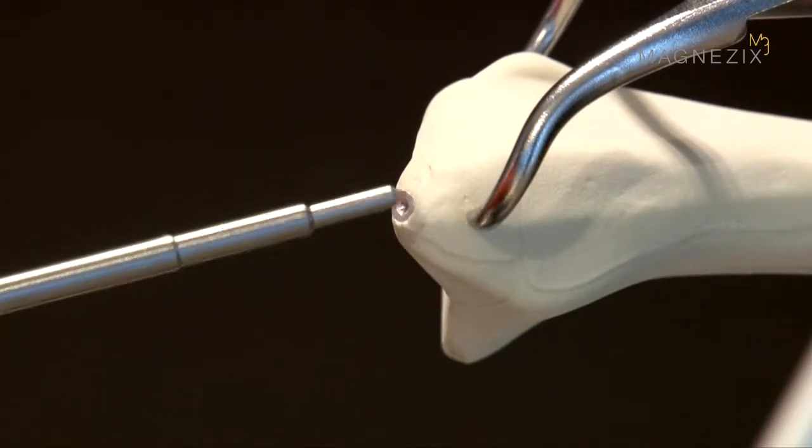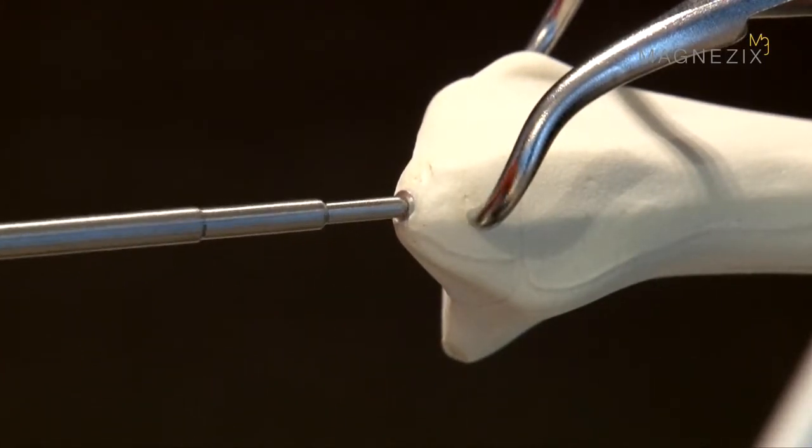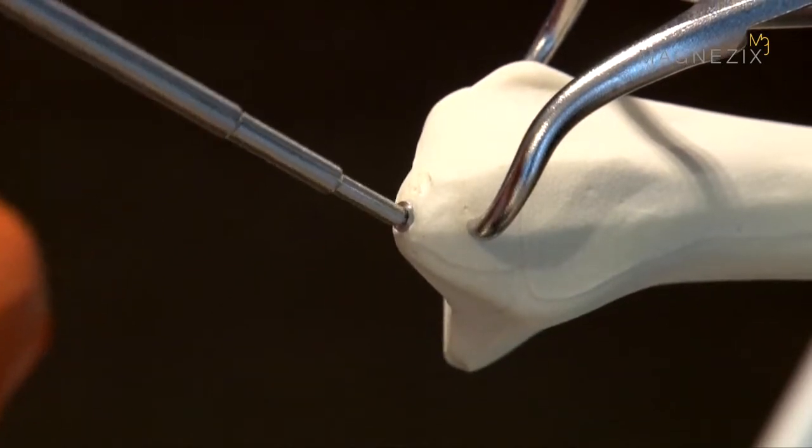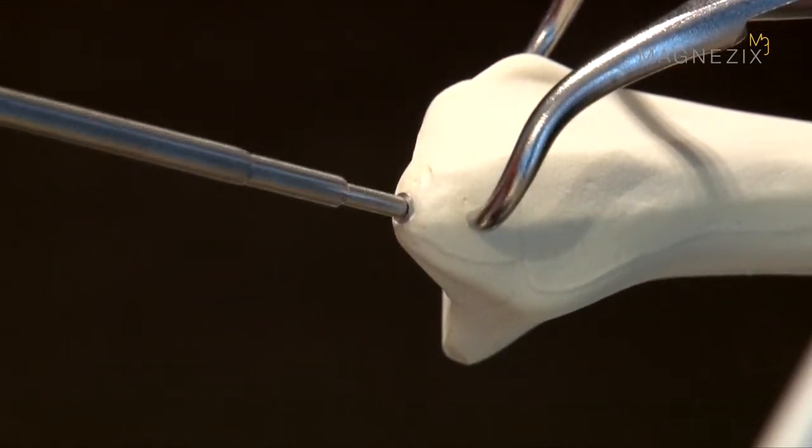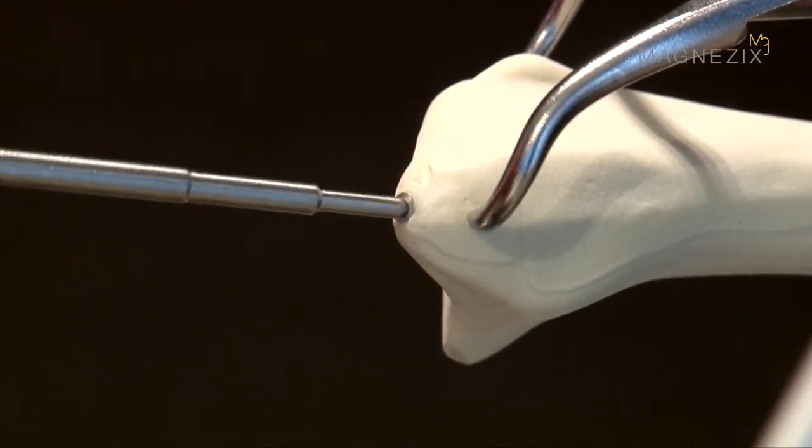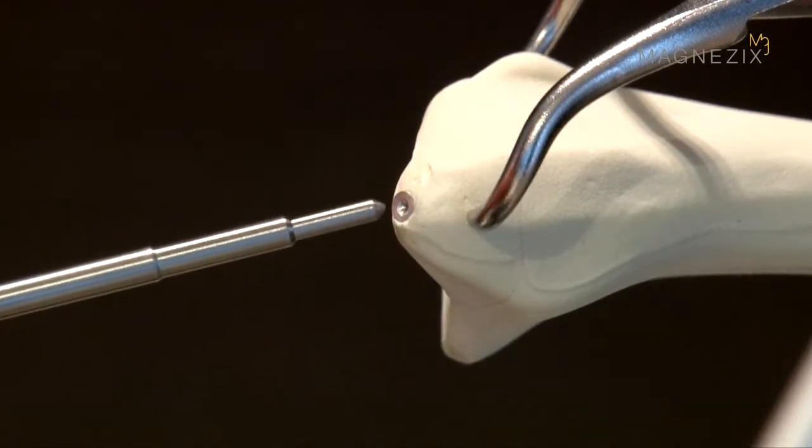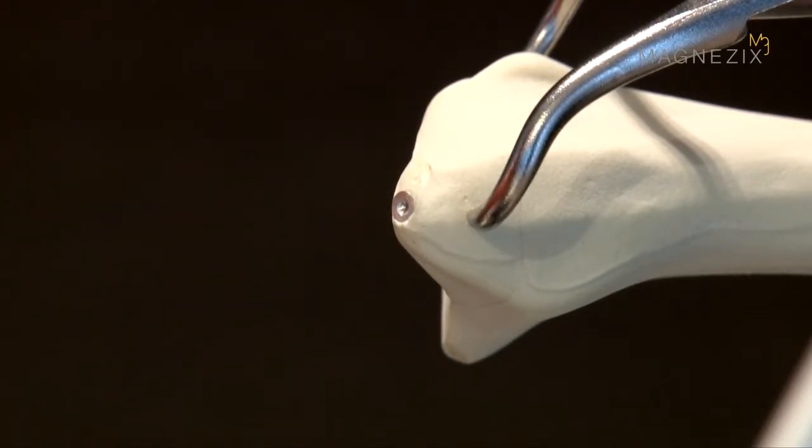Only the impactor insert is used for the last few millimeters of the insertion process. The recess in the head of the pin helps position the insert centrally. This recess also reduces the risk of the insert slipping off the pin head. This ensures a better view of the implant.